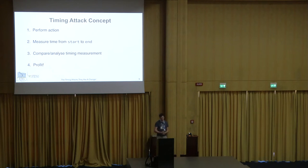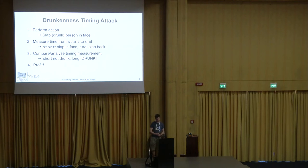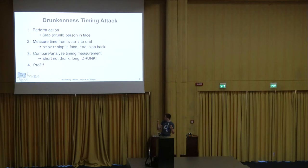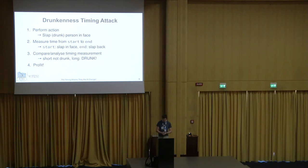In my research, I was looking at examples of timing attacks, and I came up with a new type: the drunkenness timing attack. In this attack, we try to determine whether a certain person is drunk or not. We go to that person and slap them in the face, then measure the time it takes — from when we slap them until they slap us back. A short time interval means the person is alert and not drunk; otherwise, the person is actually drunk.